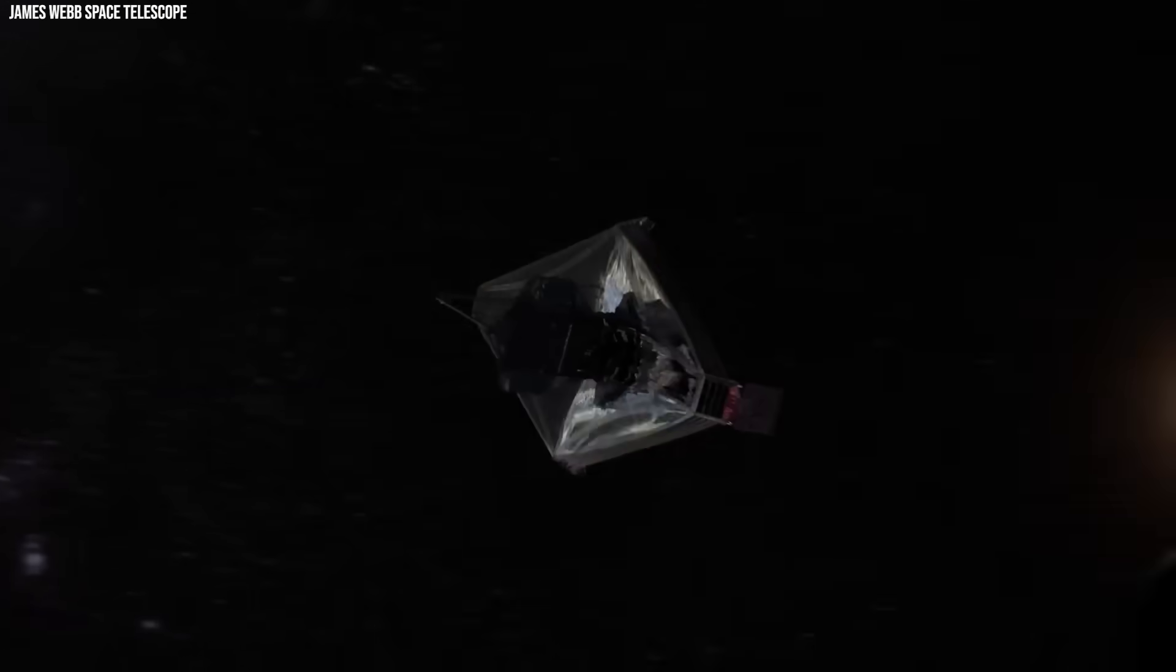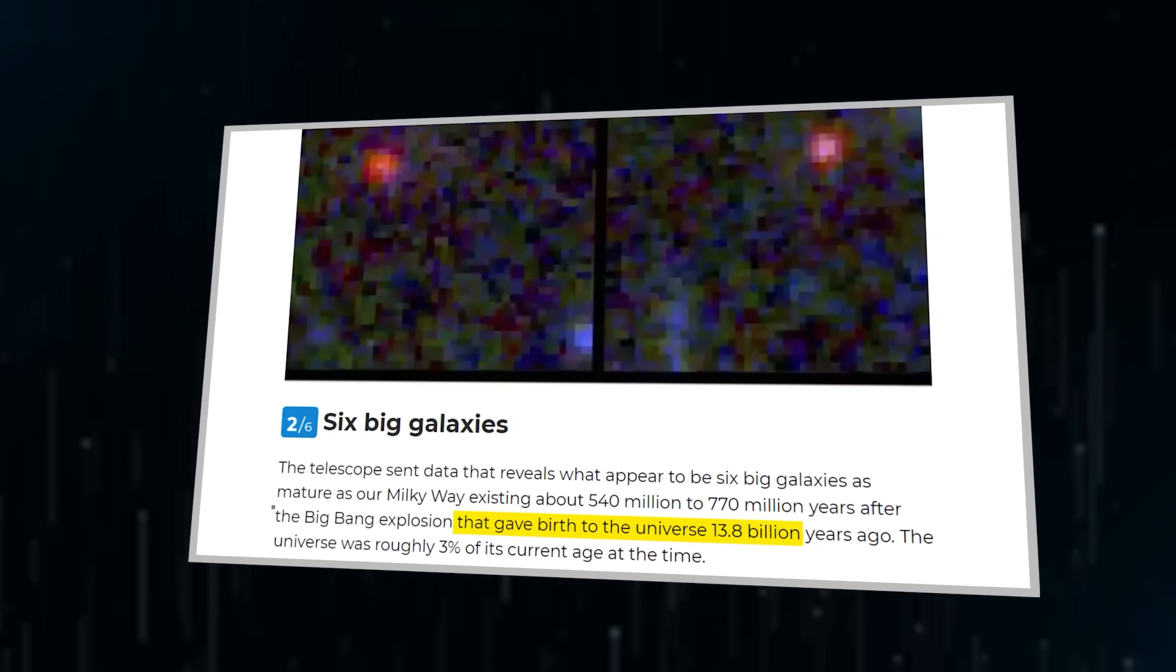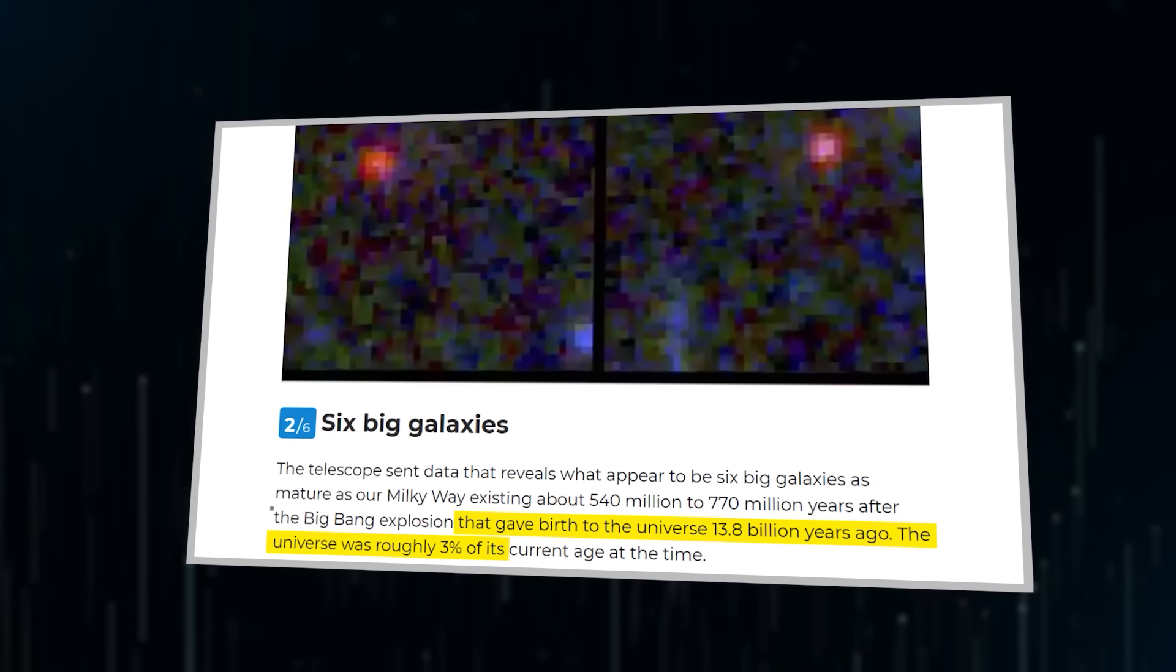Published in the journal Nature, these findings rely on data collected by the James Webb Space Telescope, depicting the universe as it existed 13.5 billion years ago, which is a mere 3% of its current age. So what is it about these galaxies that's so confusing?